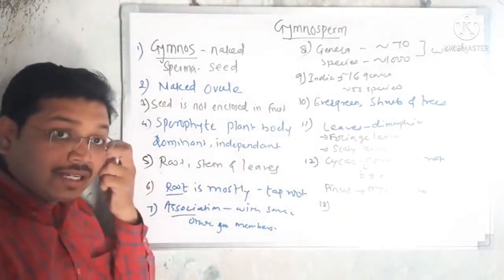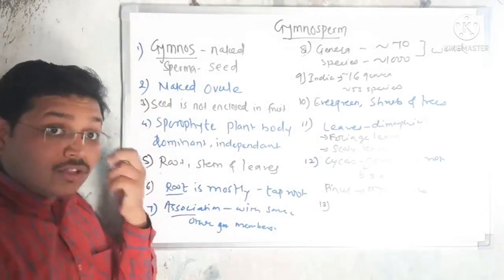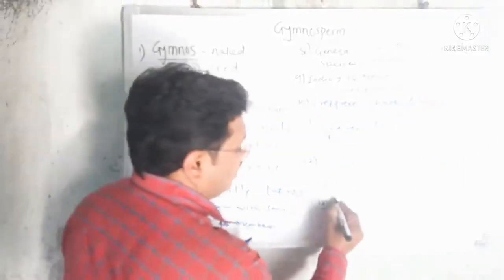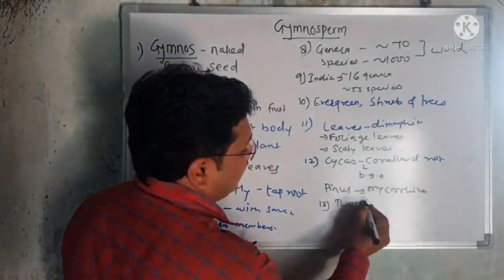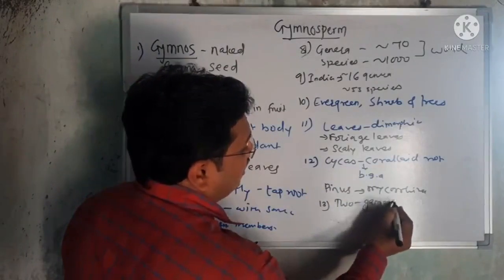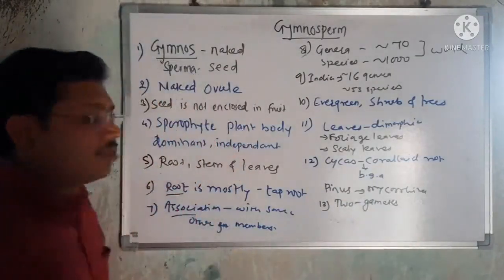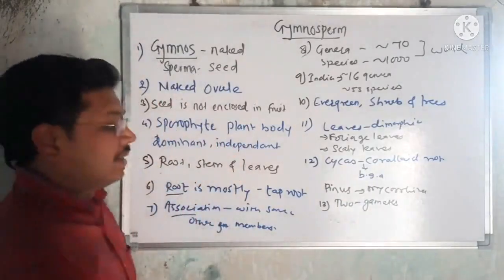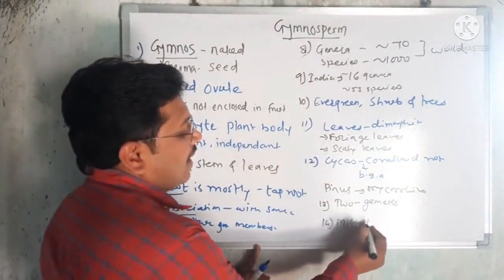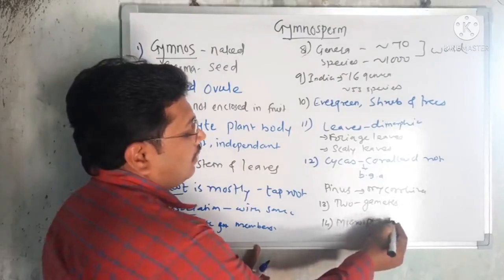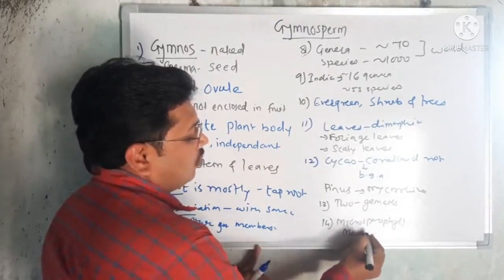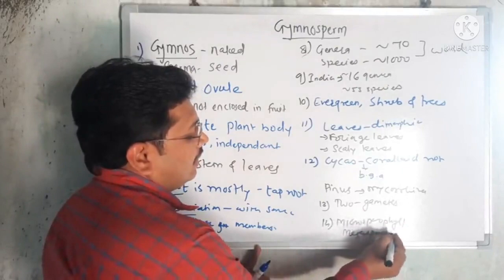Since the sporophyte is dominant and independent, there are two different types of sporophylls present: microsporophylls and megasporophylls, which carry the two different types of gametes.